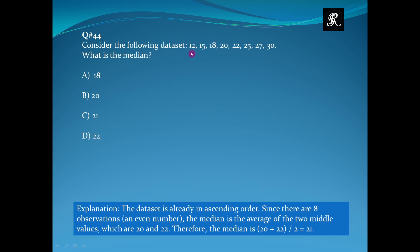Consider the following data set with eight data points: 12, 15, 18, 20, 22, 25, 27, 30. We need to find the median. The data set is already in ascending order. Whenever we need to calculate the median, we must first sort the data into ascending order.